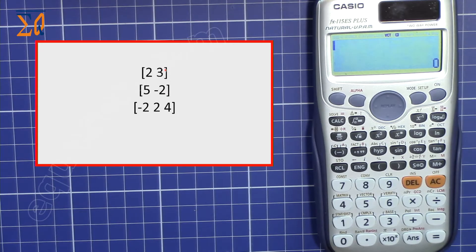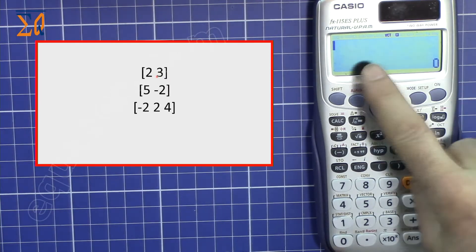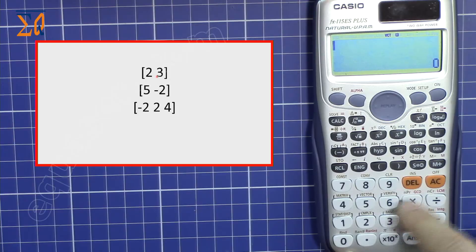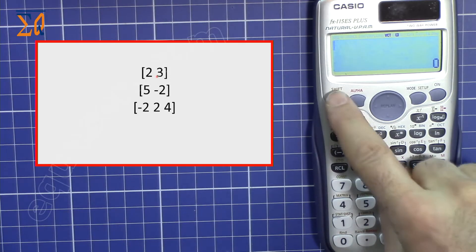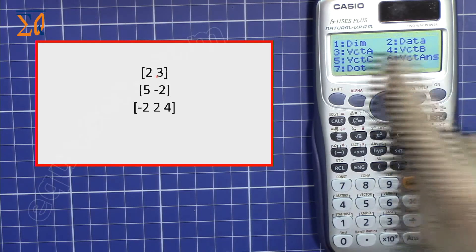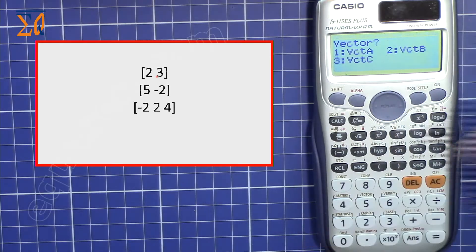To add, subtract, find the cross product, or dot product of vectors, we have to store them in memory first and then do the calculation. To store a vector, press Shift and then the vector button, which is number five.